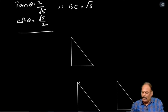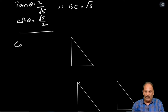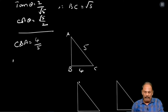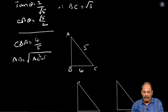Next sum: cos A equal to 4 by 5. Again we are putting the triangle titles ABC. What is the basic definition of cos? That is adjacent side by hypotenuse. Again we need to find the opposite side. That equals: AB equal to root of AC square minus BC square, that equal to root of 5 square minus 4 square.